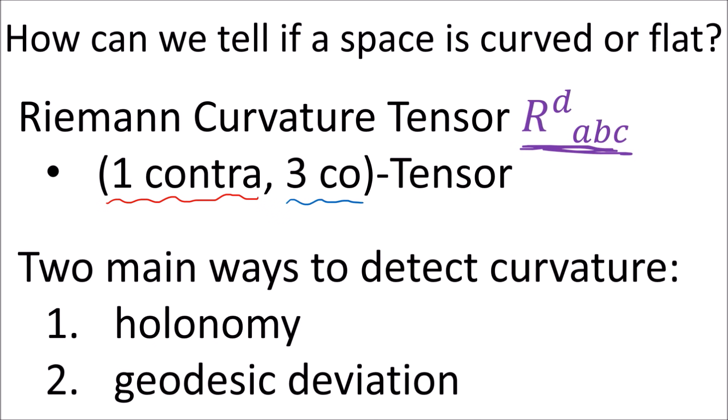There are two ways we can use the Riemann curvature tensor to detect curvature. The first is detecting what's called holonomy, and the second is detecting geodesic deviation.